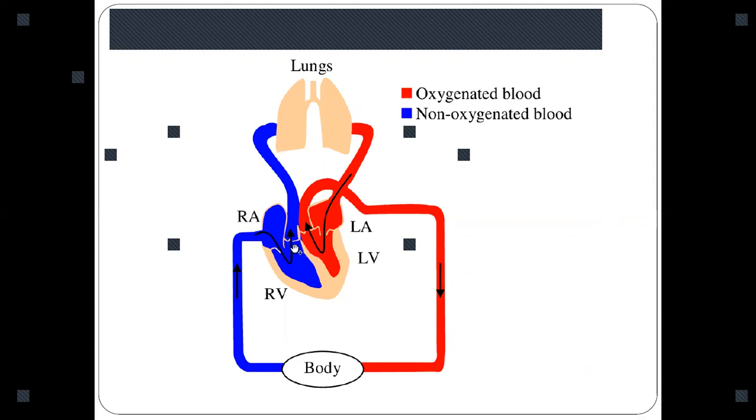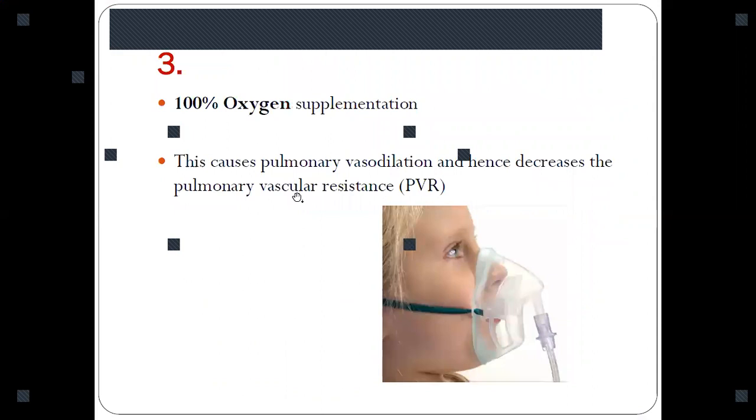The blood will go from right ventricle into the pulmonary artery rather than going from right ventricle into the left ventricle via the ventricular septal defect. Giving 100% oxygen is very useful as it causes pulmonary vasodilation and decreases pulmonary vascular resistance.